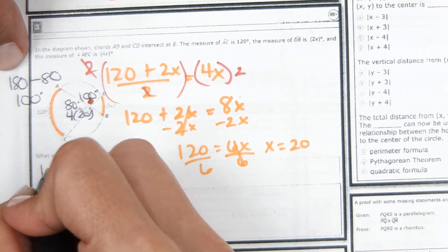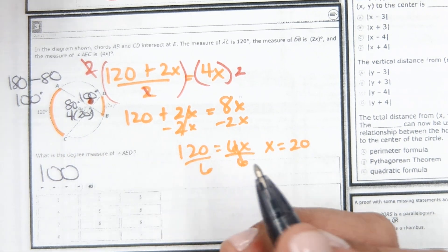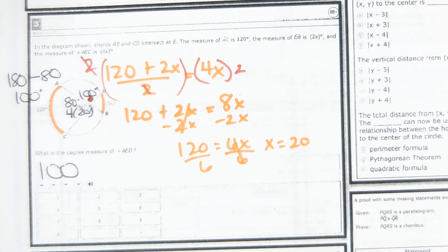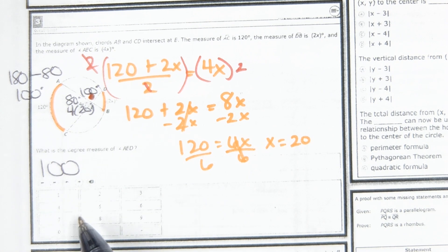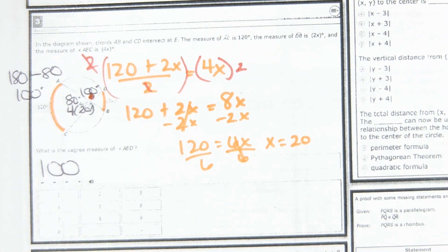Type 100 in the box — no degrees symbol needed. You can either click the boxes or type on the keyboard, whatever works.